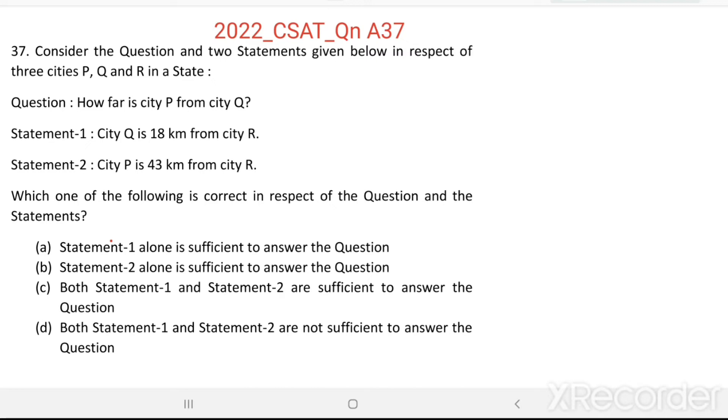Here we need to answer the question: How far is city P from city Q? For this, two statements are given. Now see the first statement. This one. City Q is 18 km from city R. City Q, distance between city Q and R is 18 km.